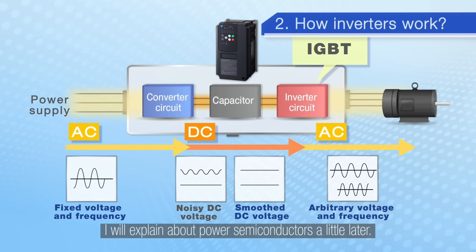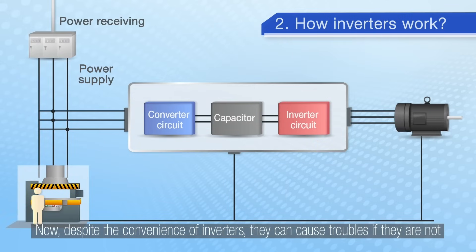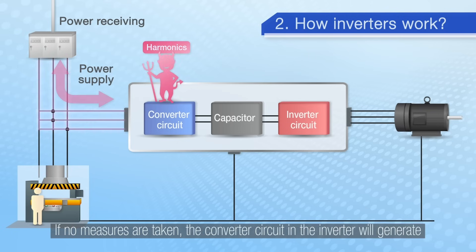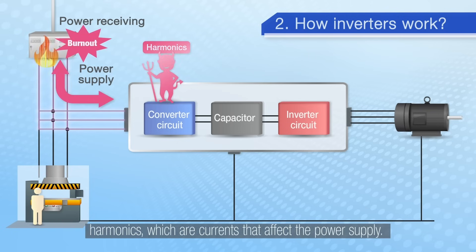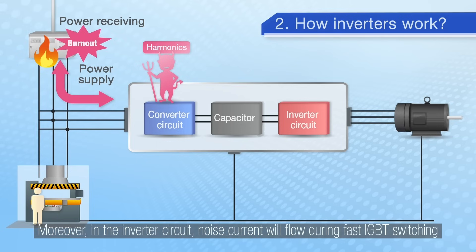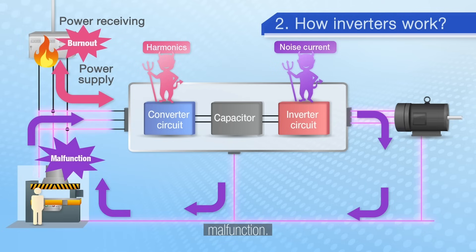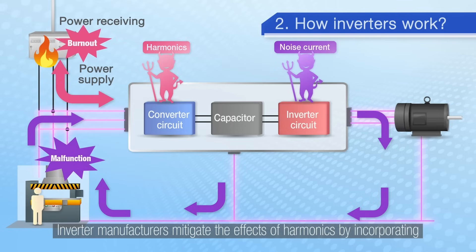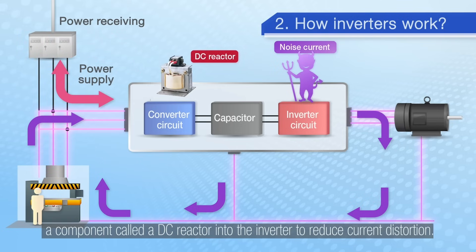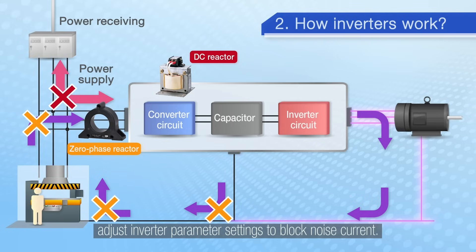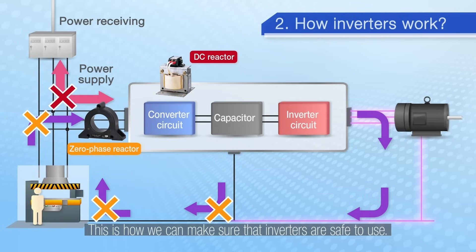I will explain about power semiconductors a little later. Now, despite the convenience of inverters, they can cause trouble if they are not used properly. If no measures are taken, the converter circuit in the inverter will generate harmonics, which are currents that affect the power supply. Moreover, in the inverter circuit, noise current will flow during fast IGBT switching of voltages and frequencies. This can easily cause peripheral devices to malfunction. Inverter manufacturers mitigate the effects of harmonics by incorporating a component called a DC reactor into the inverter to reduce current distortion. As for noise current, they use a component called a zero phase reactor and adjust inverter parameter settings to block noise current. This is how we make sure that the inverters are safe to use.